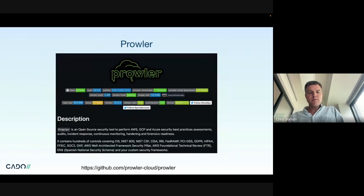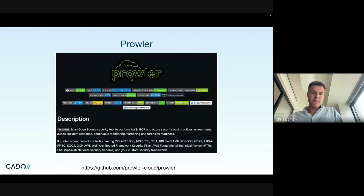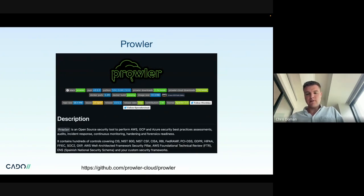The next tool is Prowler. This actually does tons of stuff around test data controls, but also in there includes forensic readiness, so you can make sure that you actually have the data that you need to investigate an instance.